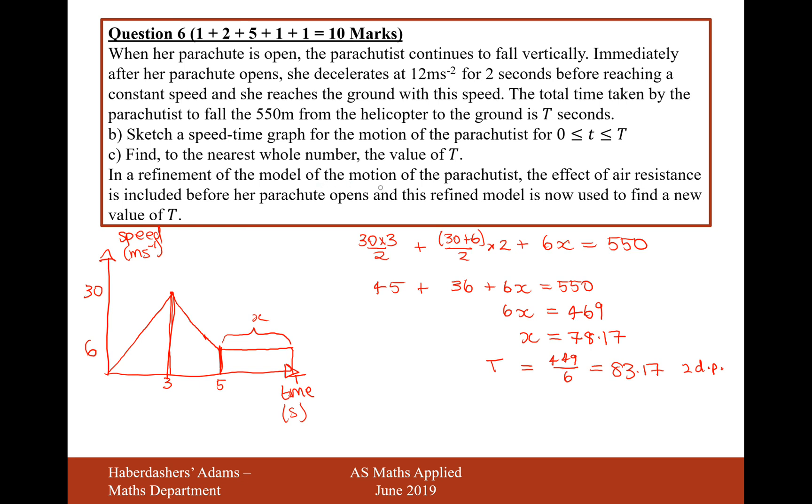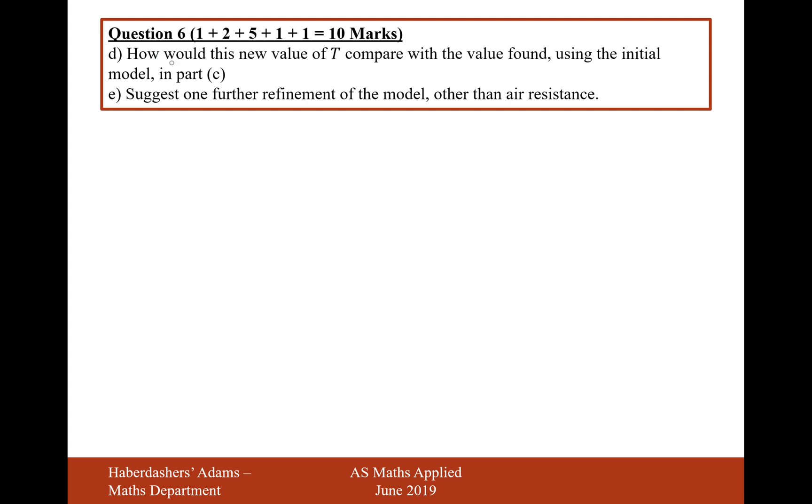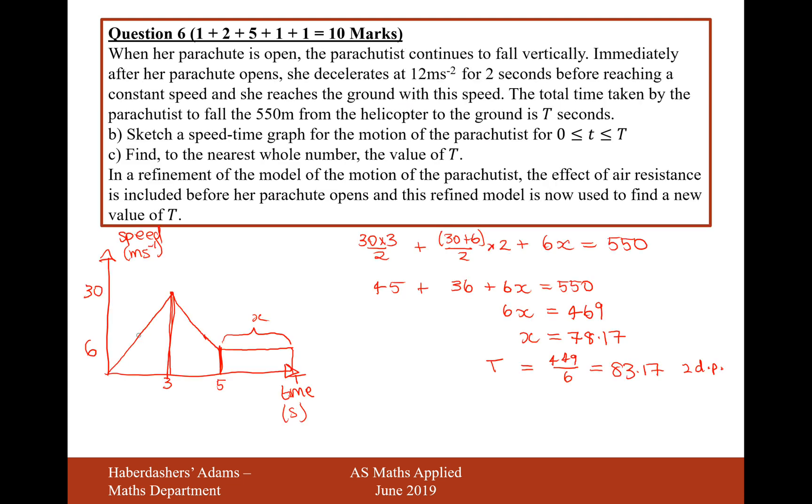In a refinement of the model of the motion of the parachutist, the effect of air resistance is included before her parachute opens. And this refined model is now used to find a new value of T. So the question here is, how would this new value of T compared with the value of T found before in your model to part C? Well, the new value of T would be bigger because it would take more time to reach this speed of 30, or in fact, it might even be the speed lower than 30. So it would actually increase the value of T because it would slow down the speed that the parachutist would initially drop out of the plane at. So it's going to increase the value of T.